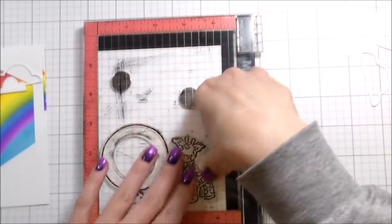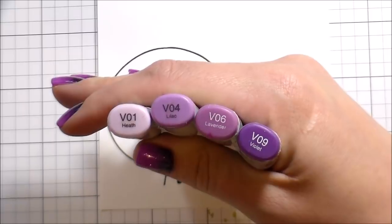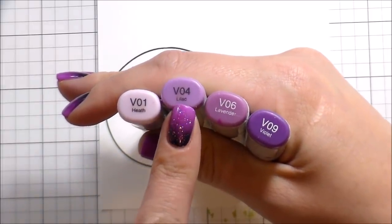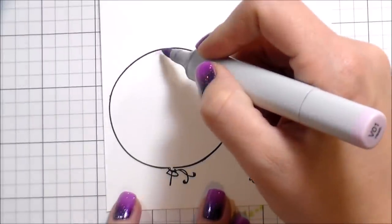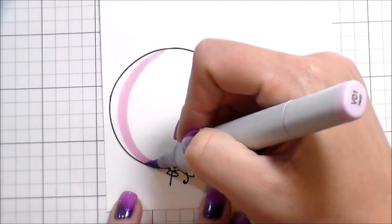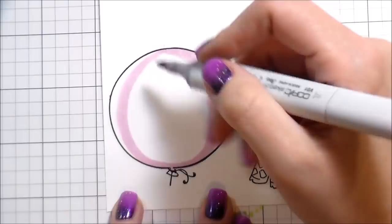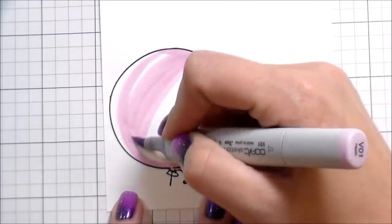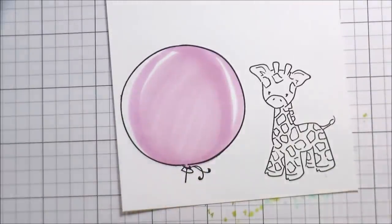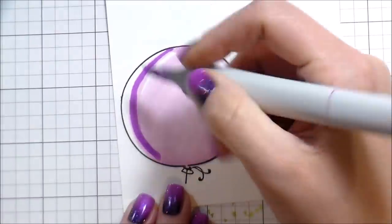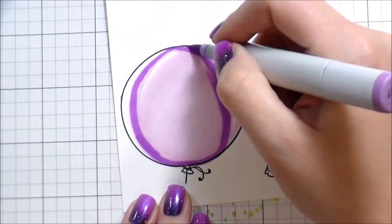Here I'm using the Gina K Amalgam ink to stamp out my images because it is Copic safe. I'm coloring this balloon purple. I knew the giraffe was going to be yellow, and yellow's complementary color is purple—that's how I chose my color scheme. Certainly any other color from the rainbow would have worked as well.